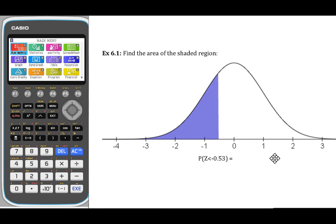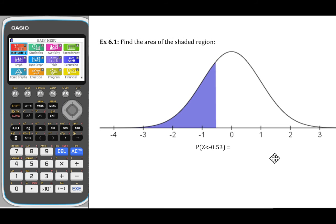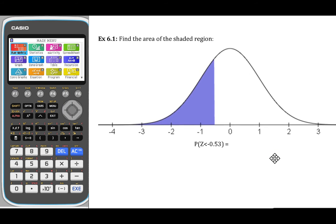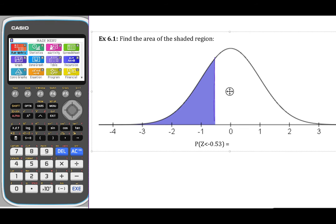In this video, we're going to look at ways to use the Casio FX CG50 to find the area under the curve for the given z-score intervals. For the first one, we are given the area to the left of the given z-score of negative 0.53. So z equals negative 0.53, and we want to find the area to the left of it.